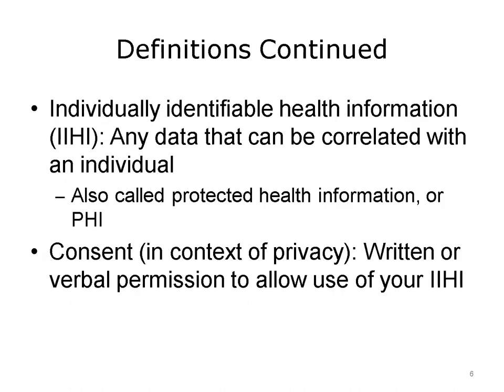Individually identifiable health information, or IIHI, is any data that can be correlated with an individual — for example, information in a medical record or a database that can be linked to a specific patient. A related term is protected health information, or PHI, which is defined as individually identifiable health information. The HIPAA Privacy Rule defines individually identifiable health information as a subset of health information, including demographic and other health information related to past, present, or future physical or mental health or condition of an individual that is created or received by a health care provider, health plan, employer, or health care clearinghouse.